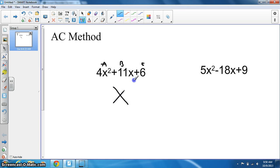Again, we use our cross or X. For the top half, we take A times C, but in this case A has a coefficient of 4. So 4 times 6 equals 24. We put our B, which is 11, in the lower part.